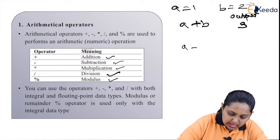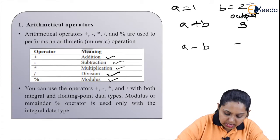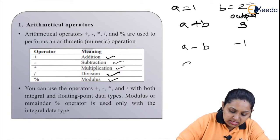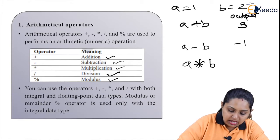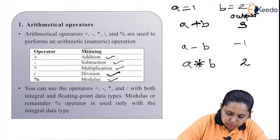When we say a minus b, we'll get output as minus 1. When we say a asterisk b, we'll get output as 2.